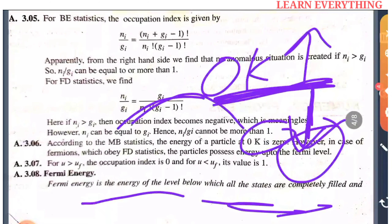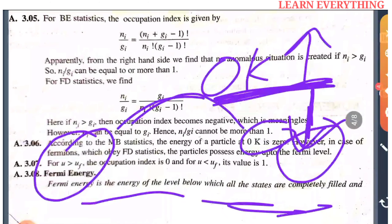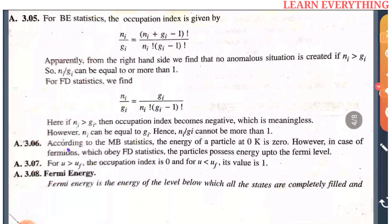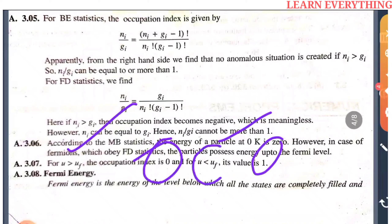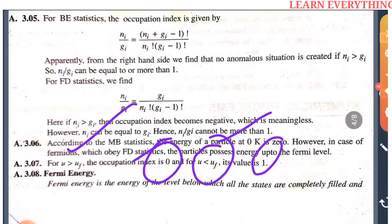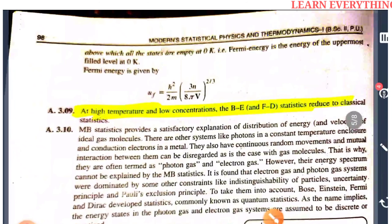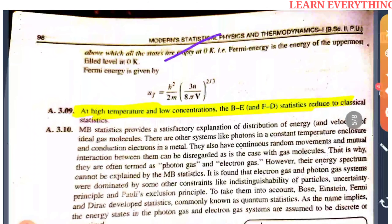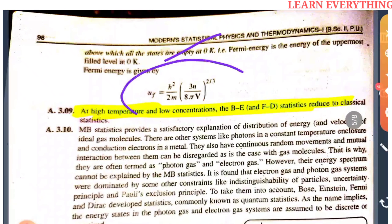In FD statistics, if energy U is greater than the Fermi energy UF, then the occupation index is 0. If U is less than UF, then the occupation index is 1. So at 0 Kelvin, UF corresponds to the Fermi level.